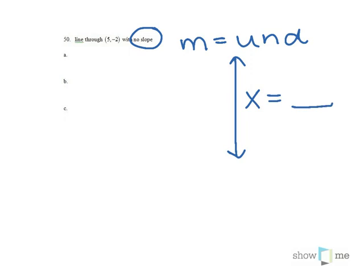In order to find out what x equals, we go back to the point. Which one represents the x? The first one. So x equals 5. That is your equation for this line in all three forms.